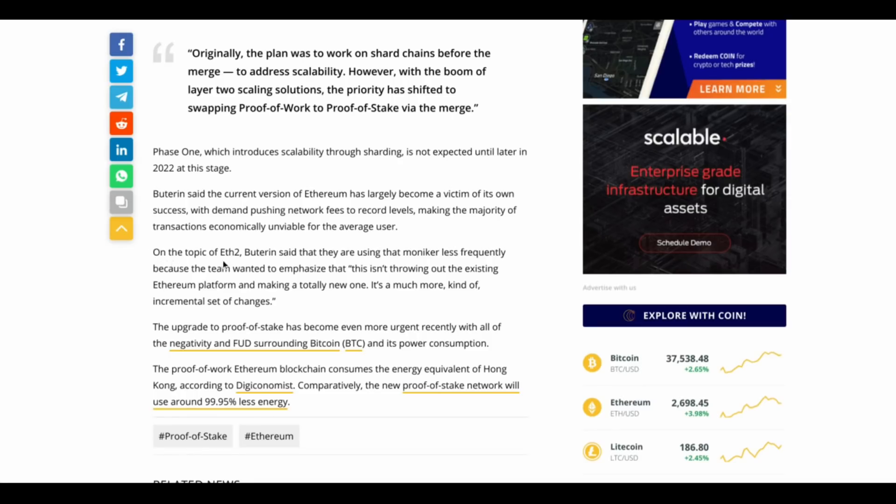Vitalik is now even starting to take issue with that label. Back to the Cointelegraph article. Here we see on the topic of ETH 2, Buterin said that they are using that moniker less frequently because the team wanted to emphasize that this isn't throwing out the existing Ethereum platform and making a totally new one. It's a much more incremental set of changes. Isn't this exactly what you say when you're unable to replace old technology with new technology? I mean, the promise wasn't we're going to incrementally improve the system. The promise was more like, ETH 1.0 doesn't scale. Don't worry. ETH 2.0 is going to be this crazy whole new system that runs on proof of stake and totally scales. Now they're saying, we don't even want to call it ETH 2.0. Really, we're not really throwing out the old Ethereum platform and making a totally new one. We're just going to incrementally improve things. This is what you say when you don't know how to rapidly improve the system on a timeline that people will be okay with.